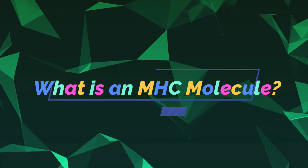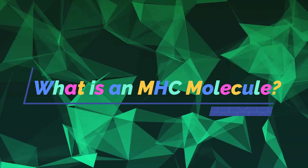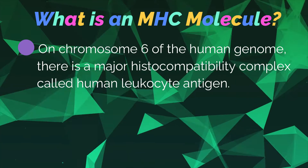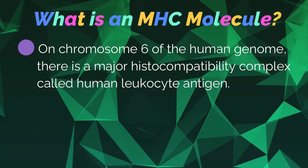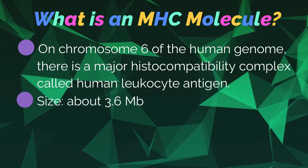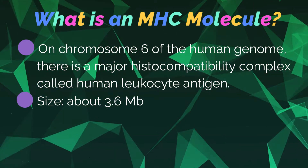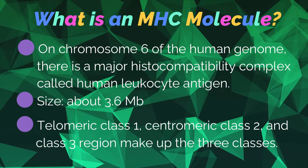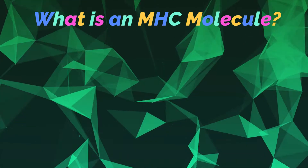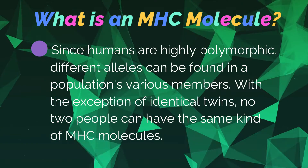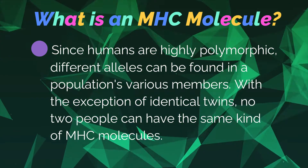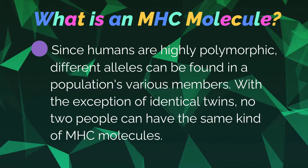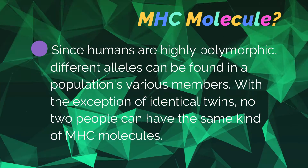What is an MHC molecule? On chromosome number six of the human genome there is a major histocompatibility complex called human leukocyte antigen. The size of this is about 3.6 MB. Telomeric class 1, centromeric class 2, and class 3 regions make up the three classes. Since humans are highly polymorphic, different alleles can be found in populations. With the exception of identical twins, no two people can have the same kind of MHC molecules.